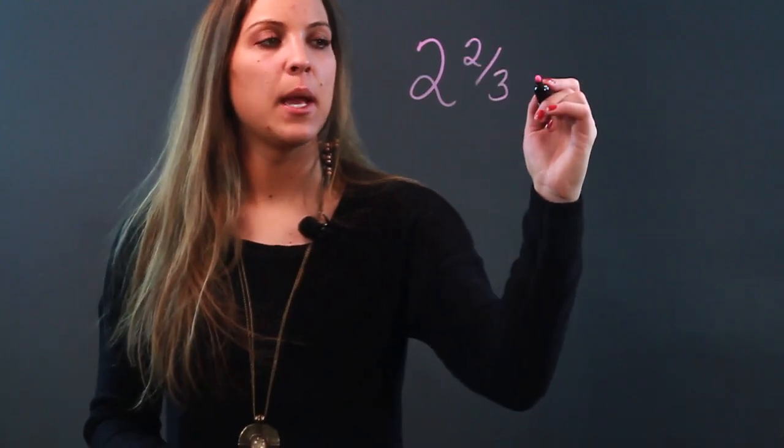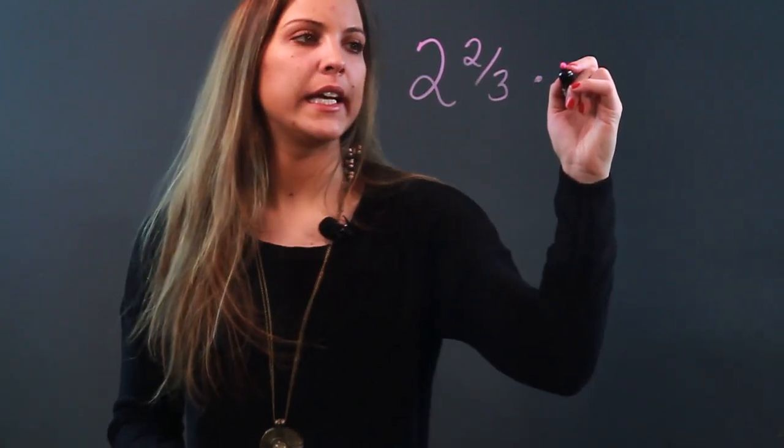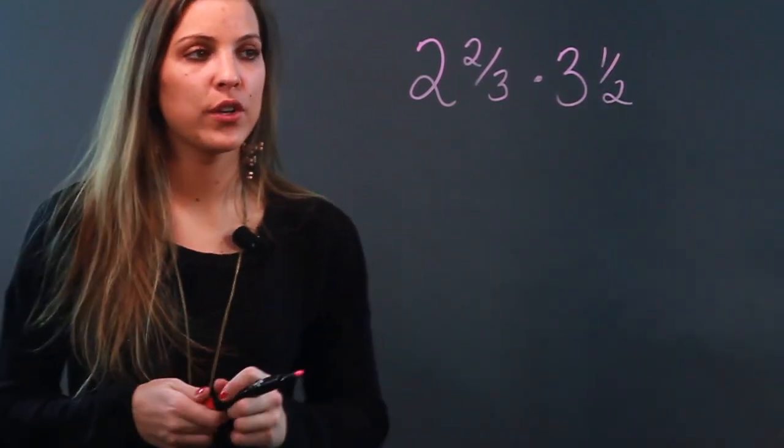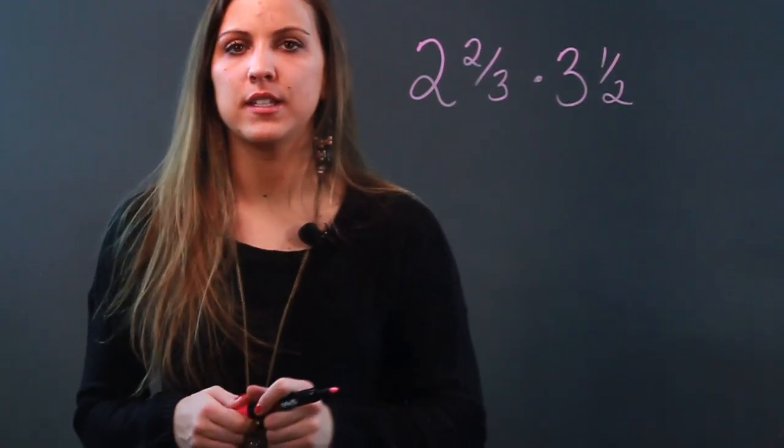So if you wanted to multiply a mixed number like 2 2/3 by another mixed number like 3 1/2, what we're going to do first is change each of these mixed numbers into improper fractions.